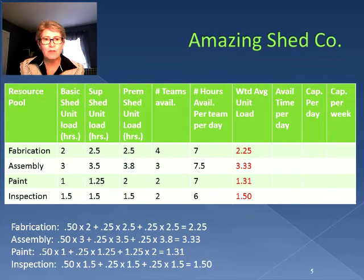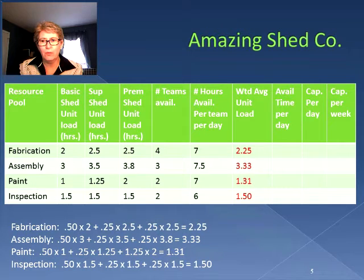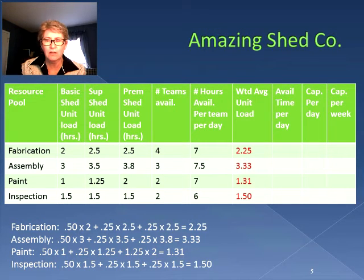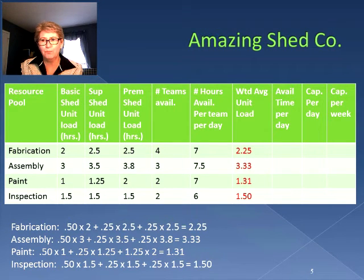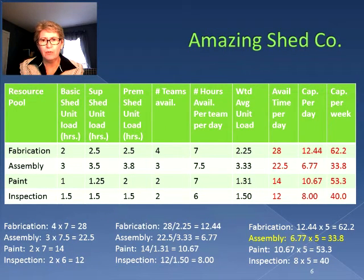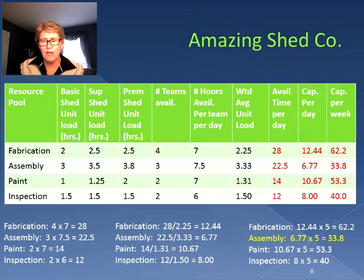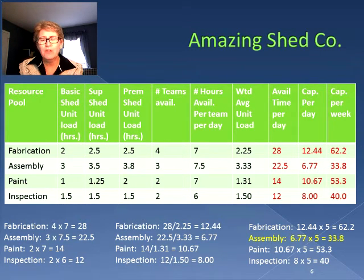When we get to fabrication, our weighted average unit load is 2.25 hours; assembly is 3.33; paint is 1.31; and inspection is 1.5. You can see how that is calculated in the bottom half of the slide. Now that we know how much time we need per shed, the next thing is to figure out how much time we have available. To calculate the available time per day, we take the number of teams for each resource times the number of hours available per team per day. So four fabrication teams times 7 hours gives us 28 hours. We do the same calculations for assembly, paint, and inspection — those hours are shown on the bottom left of the slide.